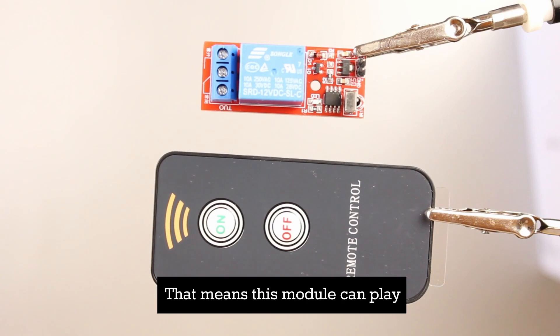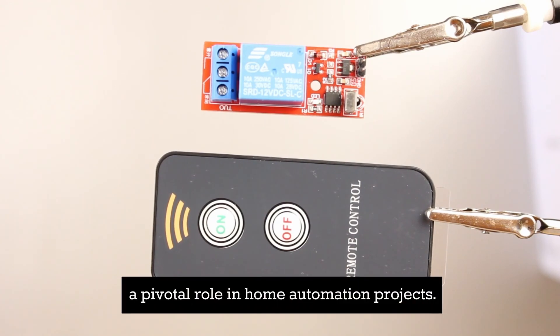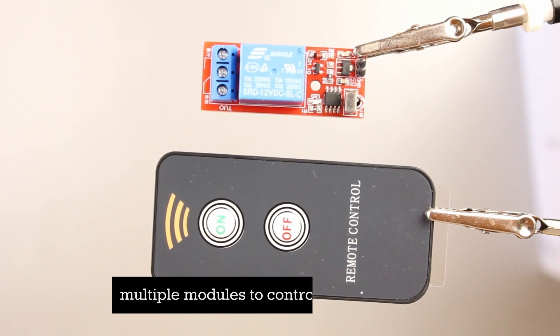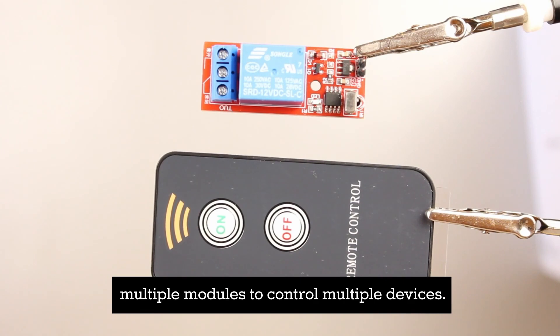That means this module can play a pivotal role in home automation projects. The single channel operation means you can control one device per module, but you can use multiple modules to control multiple devices.